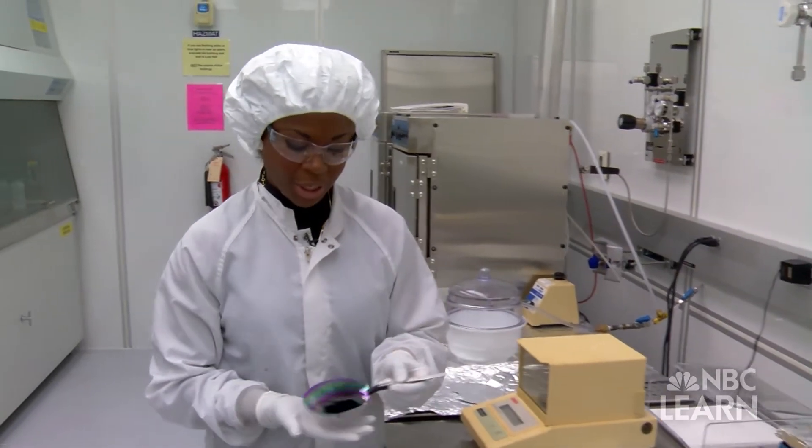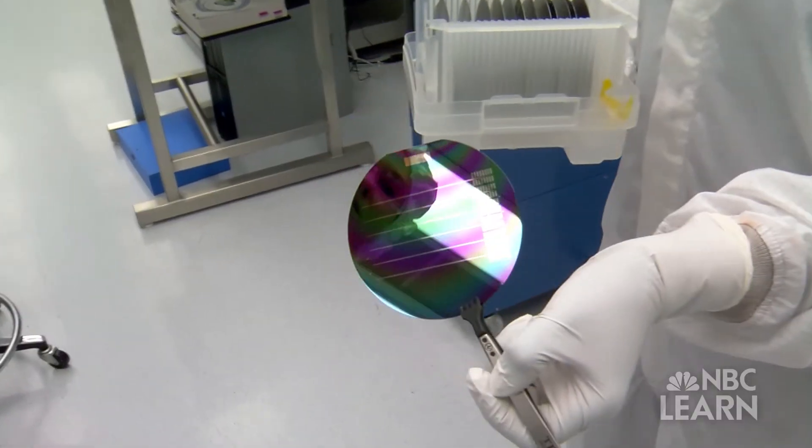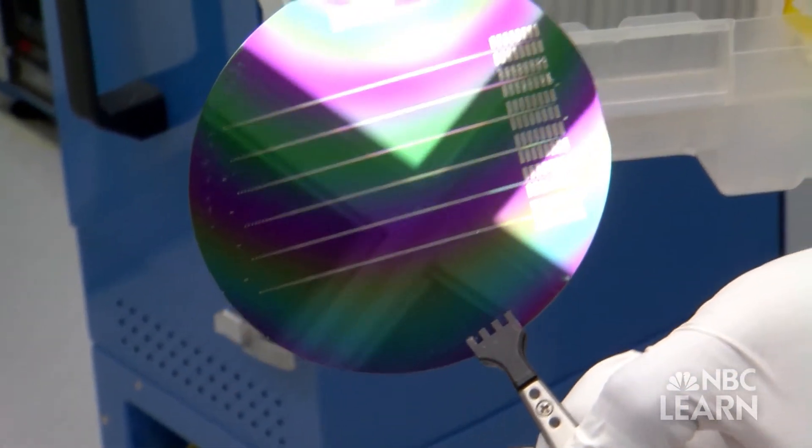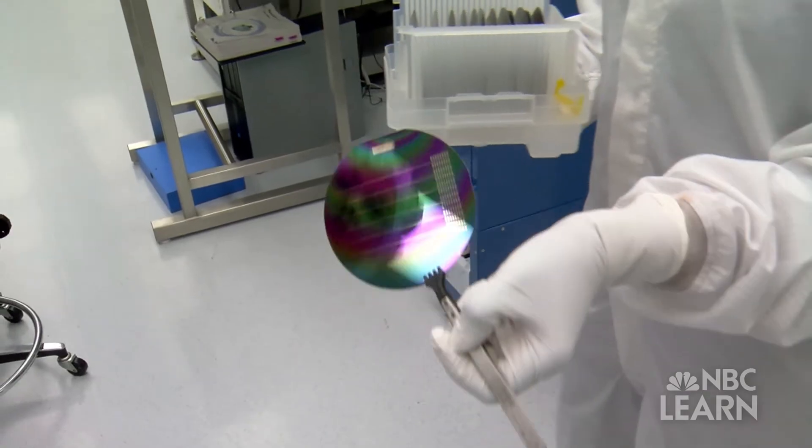This is one wafer that has, so you can see the little dots on it are the electrodes, and these are the bond pads back here. So this is one type of design.